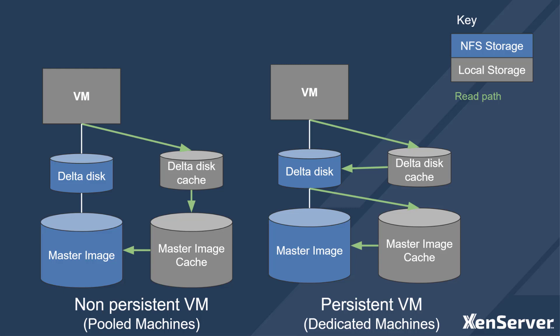For persistent machines, it is nearly the same, except that the machines can persist changes, so data is read through the delta disk to ensure changes are picked up by the cache. All the caches are persistent — there is no need to flush these caches at any point. This enables the VMs to make full use of the cache at all times.